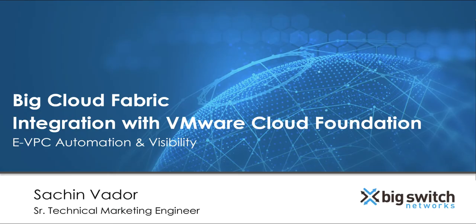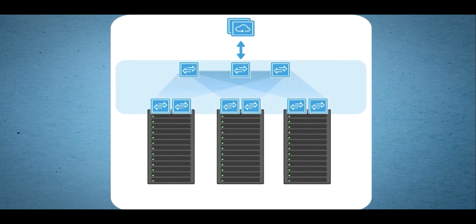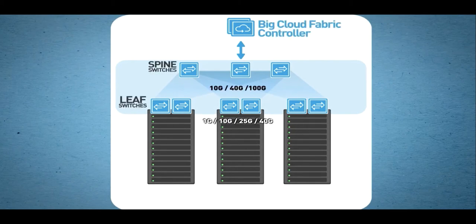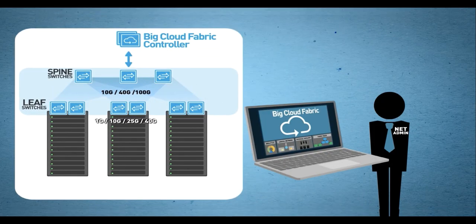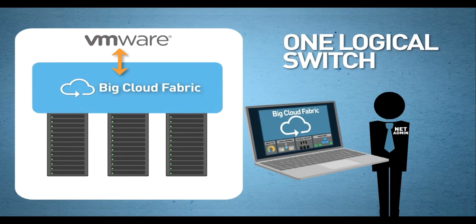Hello. In this demo, we will see how Big Cloud Fabric integrates with VMware Cloud Foundation and is an ideal fabric to get the maximum benefits from your VMware Cloud Foundation deployments. Big Cloud Fabric is powered by an SDN controller to build a leaf-spine fabric using open networking switches. Unlike box-by-box networks, Big Cloud Fabric provides a single pane of glass, integrates with various VMware SDDC products, and operates the entire fabric as a single logical switch.